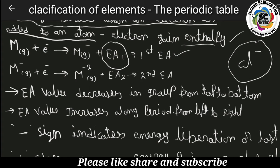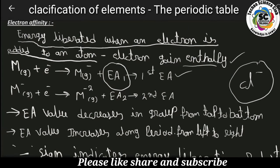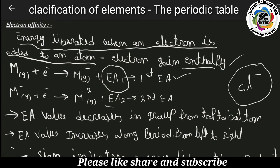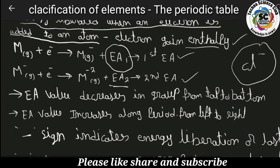The energy liberated when an electron is added to a negative ion to form a second negative ion is called the second electron affinity, EA₂.